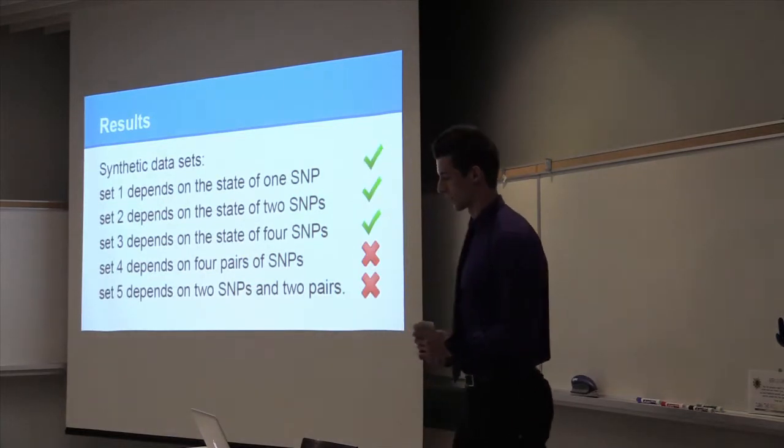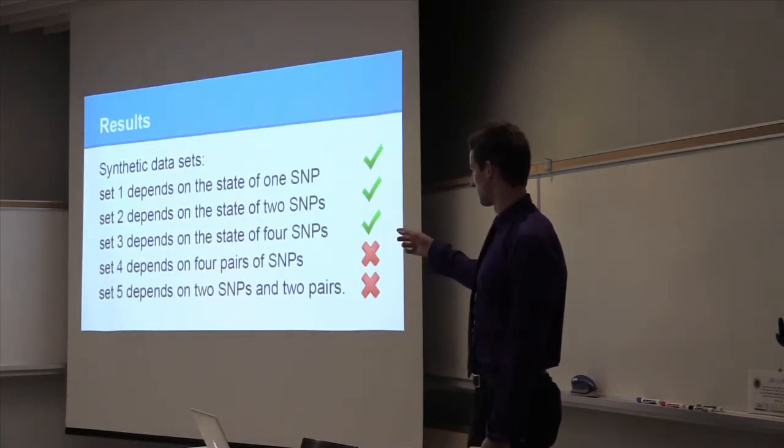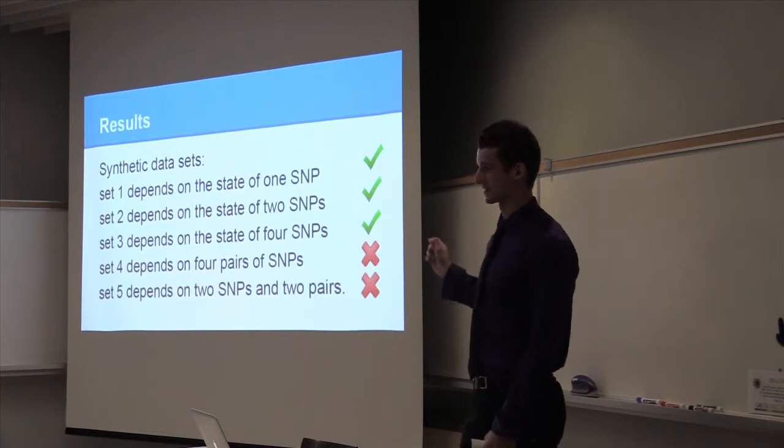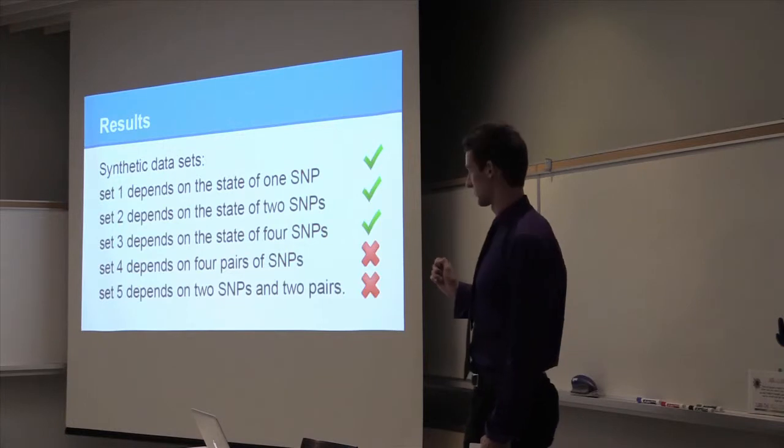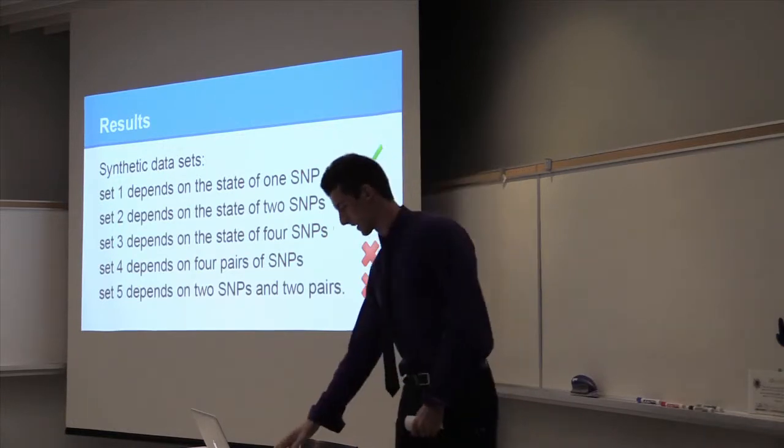Where the method broke down was when set four depends on four pairs of SNPs. So that's different than eight SNPs, and that's where it breaks down. So we're working on that now.